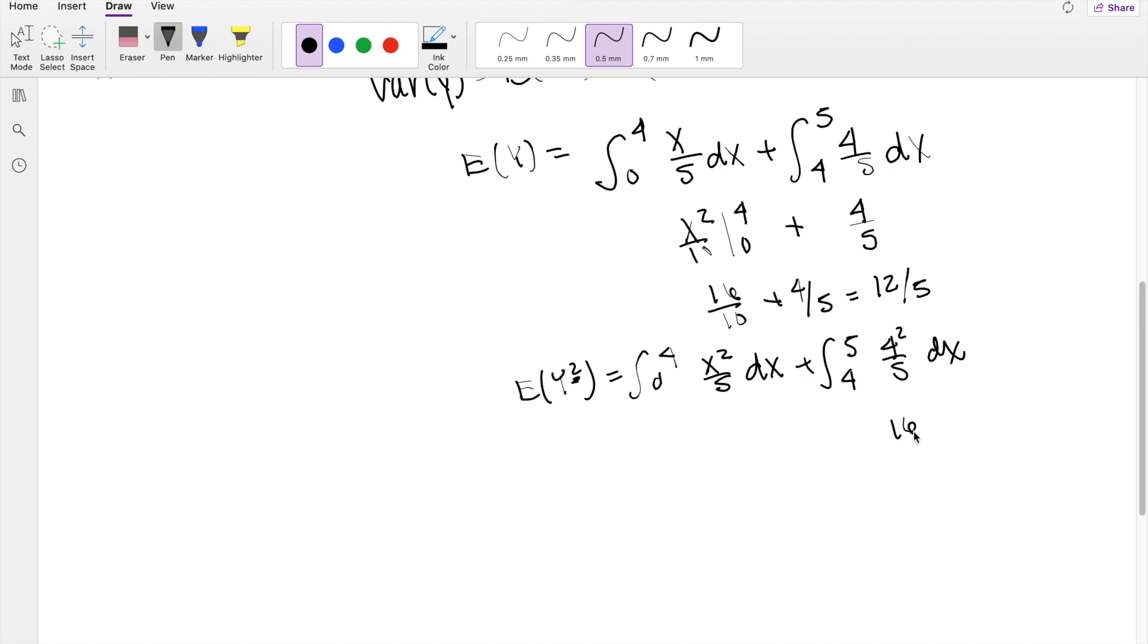This right here is still going to be 16 over 5, plus, because essentially you're going to get x, right, and it's 5 minus 4, which is 1. Right here is going to be x cubed over 15, integrating from 0 to 4, so that's 4 cubed, which is equal to 64 over 15, plus 16 over 5, which is equal to 112 over 15.